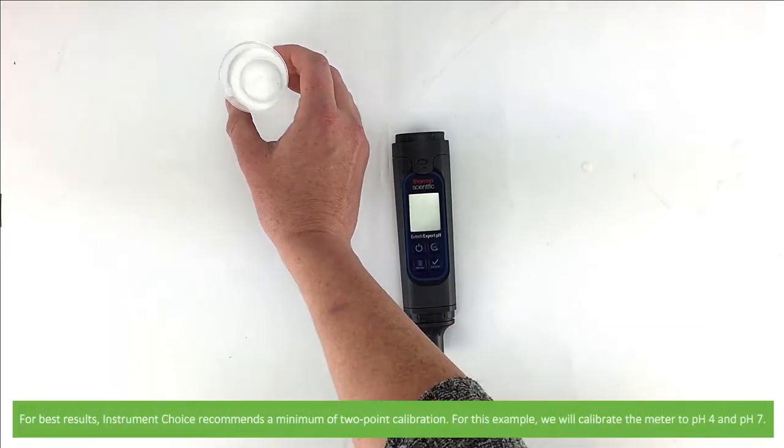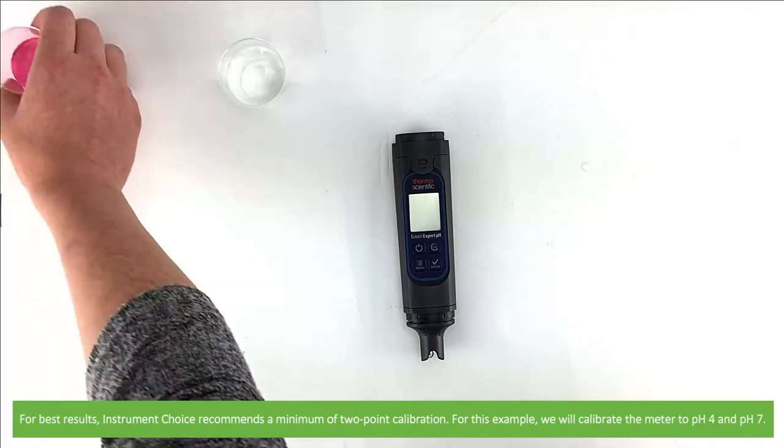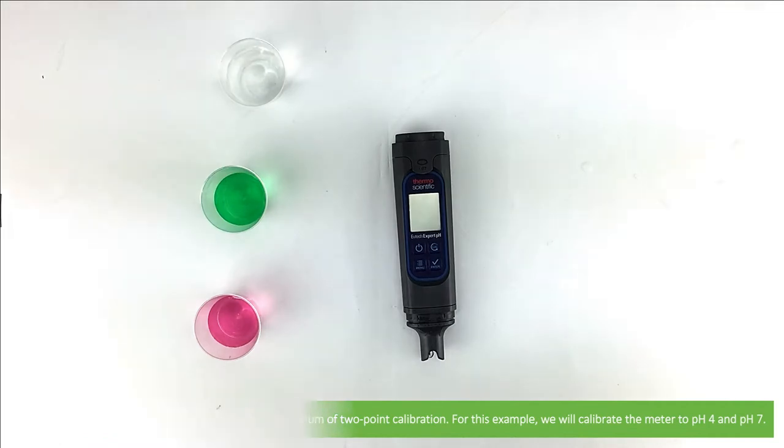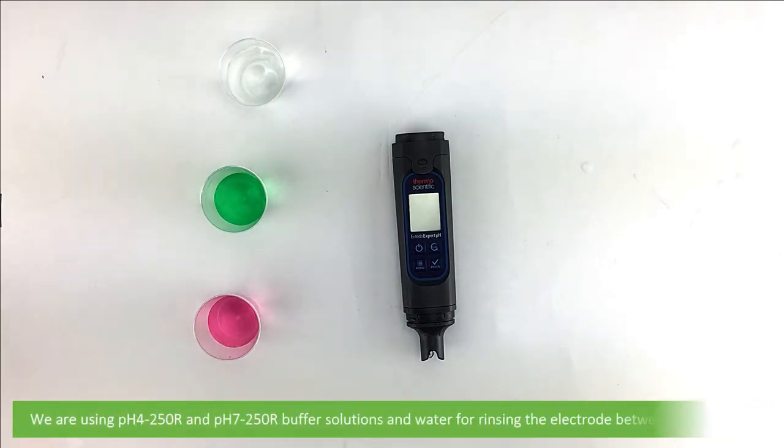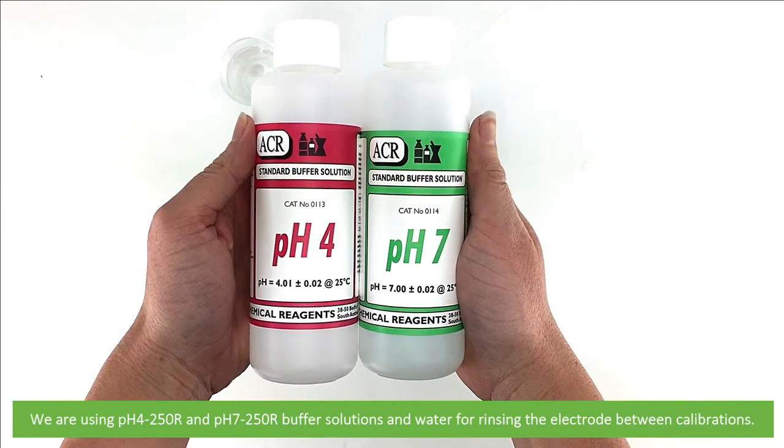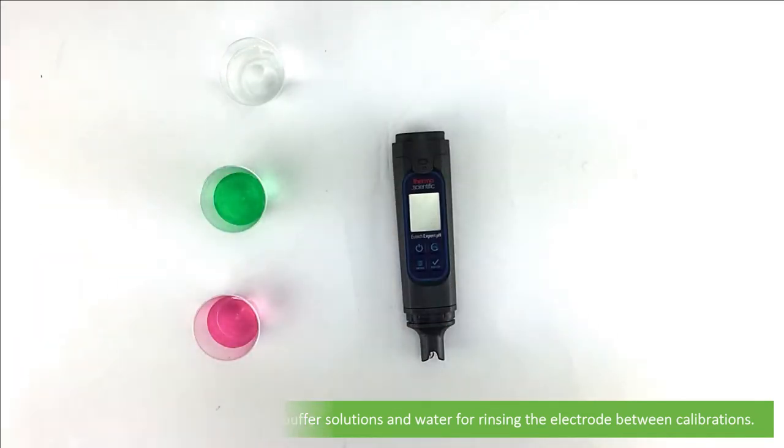For best results, Instrument Choice recommends a minimum of two-point calibration. For this example we will calibrate the Expert pH to pH 4 and pH 7. We are using pH 4-250R and pH 7-250R buffer solutions, and we have some water for rinsing the electrode between calibrations.